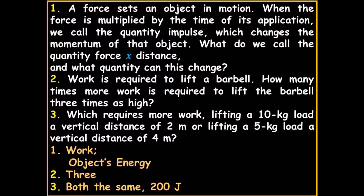Work is required to lift a barbell. How many times more work is required to lift the barbell three times higher? Distance and work are proportional — they are direct — so three times higher means three times the work.